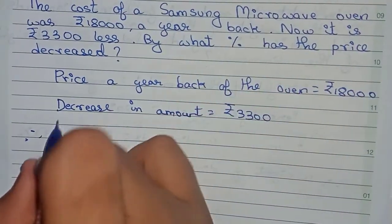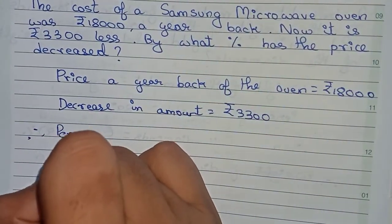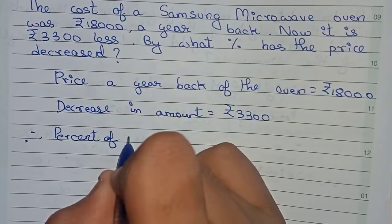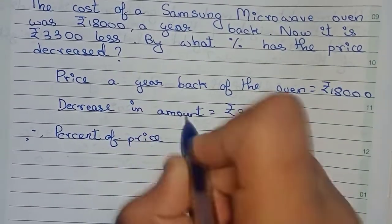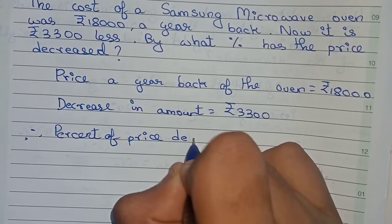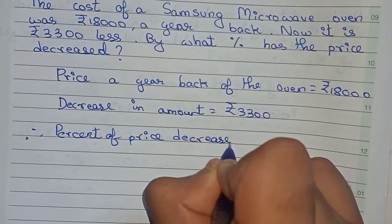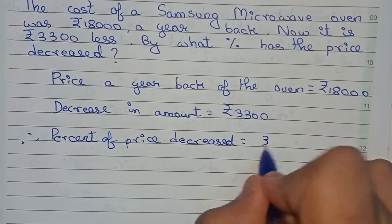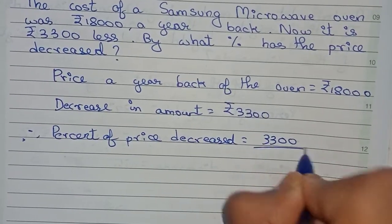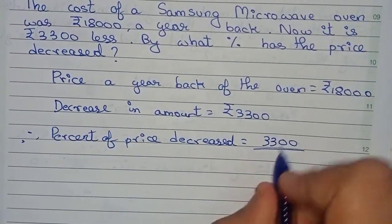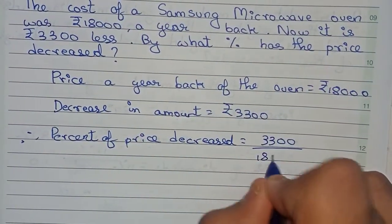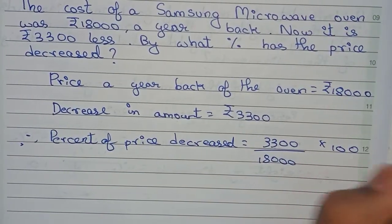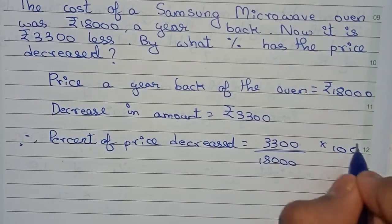So what we have to find is: what percent has the price decreased? So percent of price decrease equals the decrease in amount divided by the price a year back, that is 18,000, multiplied by 100. Since we are finding percentage, first we cut the zeros.